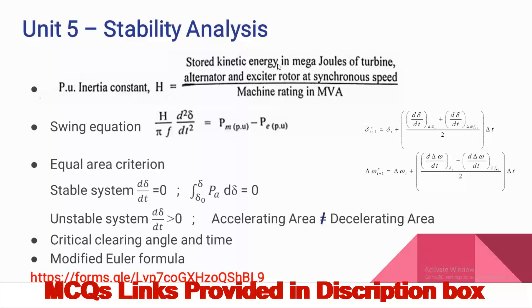The important formula is the per unit inertia constant H, which equals stored kinetic energy of the turbine-alternator and exciter rotor at synchronous speed in mega joules, divided by machine rating in mega volt amperes. The swing equation is: (H divided by π·f) multiplied by (d²δ/dt²) equals Pm per unit minus Pe per unit (mechanical power minus electrical power). By using the equal area criterion, we can determine system stability. If the system is stable, dδ/dt equals zero.